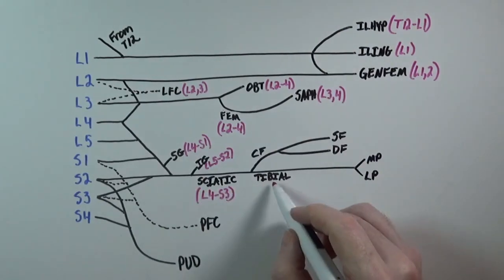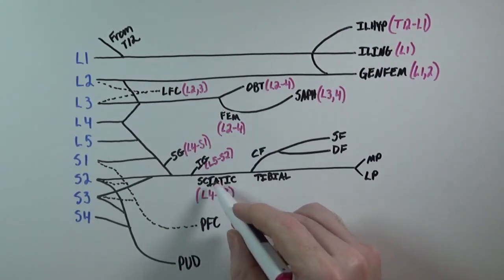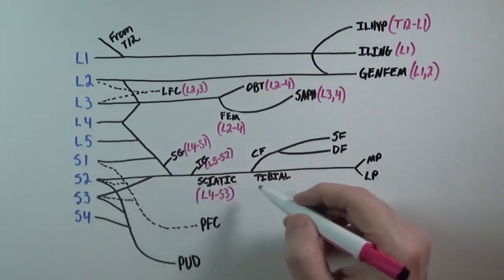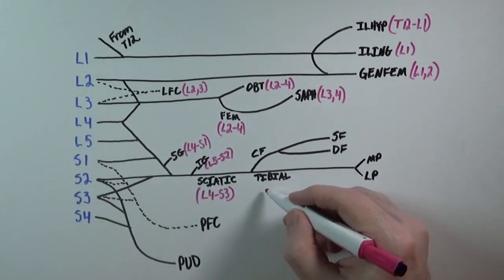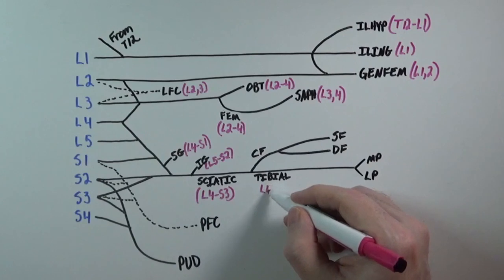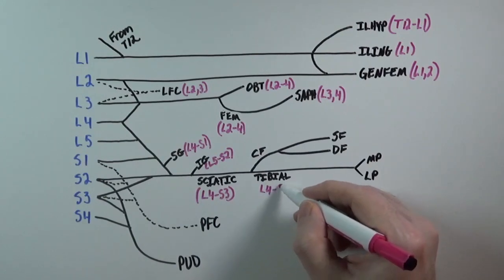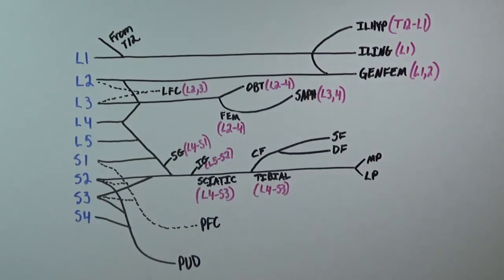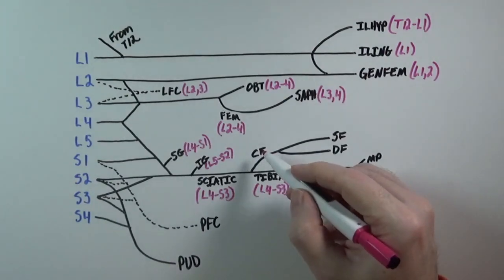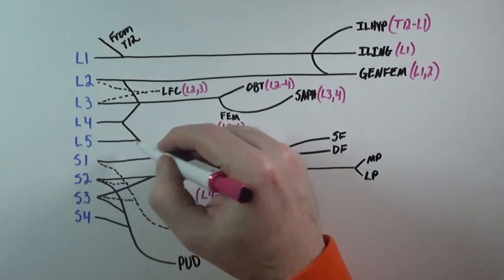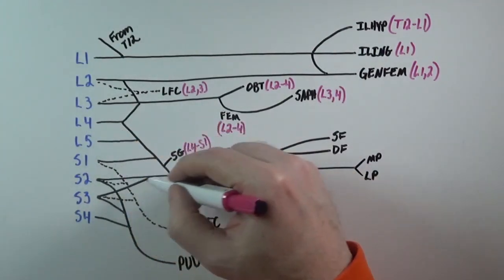The tibial nerve, much like the sciatic nerve, comes from L4, L5, S1, S2, and S3. The common fibular nerve, however, comes from only L4, L5, S1, and S2.